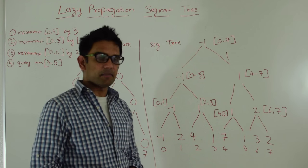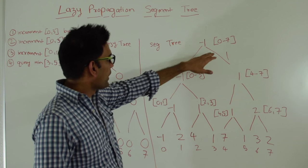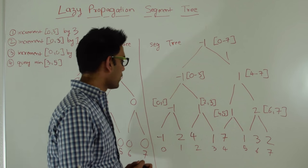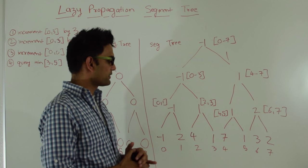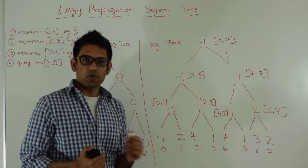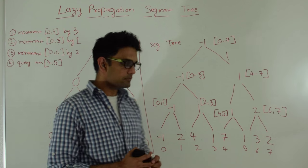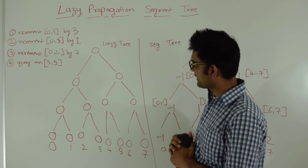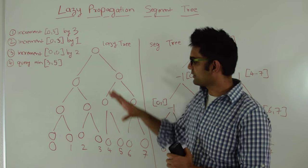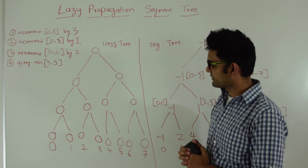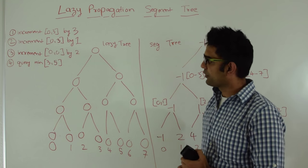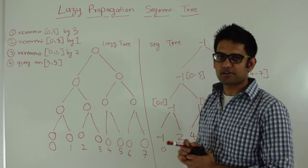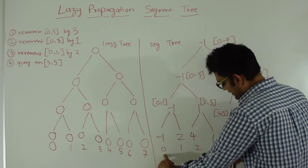First I create a minimum segment tree for this array. This is a minimum segment tree where minus 1 is the minimum from range 0 to 7, minus 1 is minimum of range 0 to 3, 1 is minimum in range 4 to 7 and so on. This is really represented in the form of array but for simplicity I am representing it as a tree. For lazy propagation we'll need another array of the same size as this segment tree to store the lazy information. So we're going to apply these four operations and show how lazy propagation works. Our first operation is increment in the range 0 to 3 by 3.